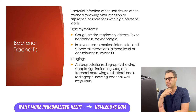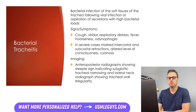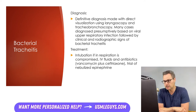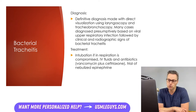Labs in bacterial tracheitis aren't very helpful, as white blood cell counts can be low, normal, or high, and blood cultures are rarely positive. The definitive diagnosis is made by directly visualizing the problem using laryngoscopy and tracheobronchoscopy. Many cases are diagnosed presumptively based on a viral upper respiratory infection followed by clinical and radiographic signs of bacterial tracheitis. A lack of response to nebulized epinephrine can also help distinguish between croup and bacterial tracheitis, as many clinical symptoms and radiographic findings overlap.